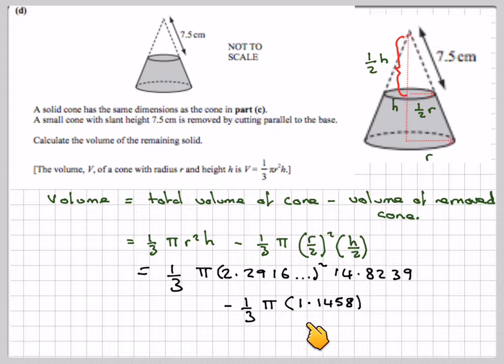Minus 1 third pi of 1.1458 squared, which is going to be this height here, half of h times 7.411. That's going to give you 71.33 centimetres cubed, which is 71.3 centimetres cubed.